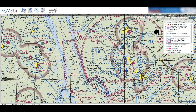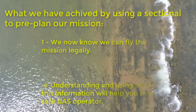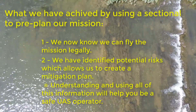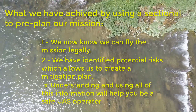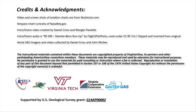Many TFRs are assigned to VIPs, such as congresspeople or the president. That wraps up our sample planning session. Essentially, what we've done here is to establish that we can legally fly our survey of Saline Creek. We've also identified some potential hazards, and that will allow us to mitigate some of the risk. And this brings us to the end of our series on how to read sectionals for UAS operators. I hope this has been informational, and we wish you the best of luck in your unmanned aerial endeavors. Thank you for joining us, and as always, fly safe.